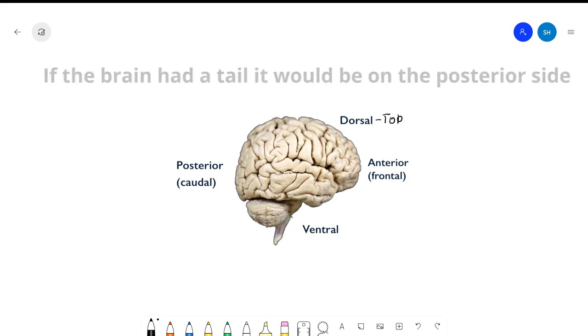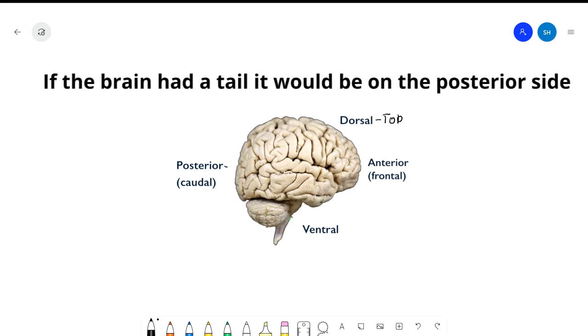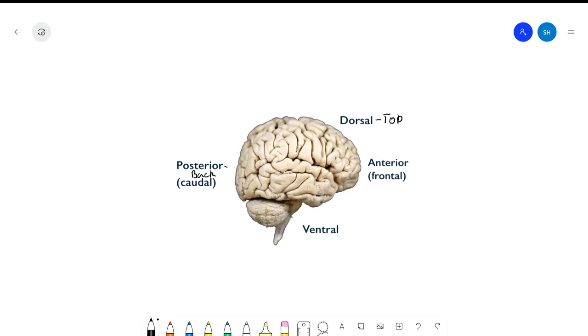Posterior is the back. Anterior is the front. The difference between anterior and dorsal is that dorsal is like your crown of your head and front is more of your forehead and that part. And ventral is like the base of your brain.